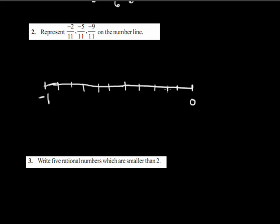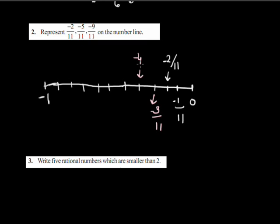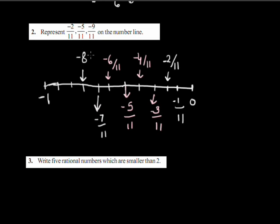Drawing lines 1 through 10 between 0 and -1, giving 11 equal parts. The first line is -1/11, second is -2/11, third is -3/11, fourth is -4/11, fifth is -5/11, sixth is -6/11, seventh is -7/11, eighth is -8/11, ninth is -9/11, tenth is -10/11, and lastly -11/11 which is -1.